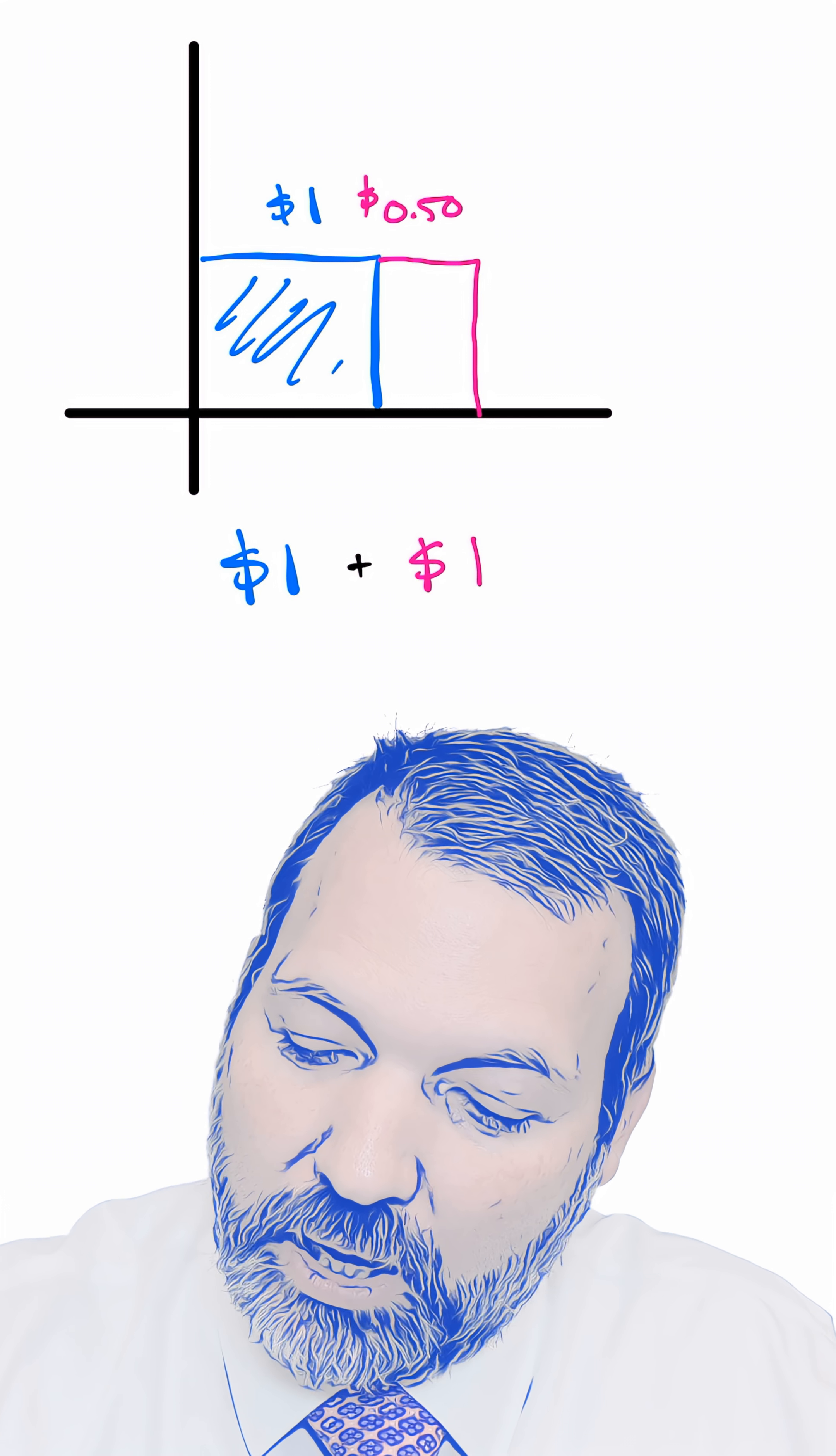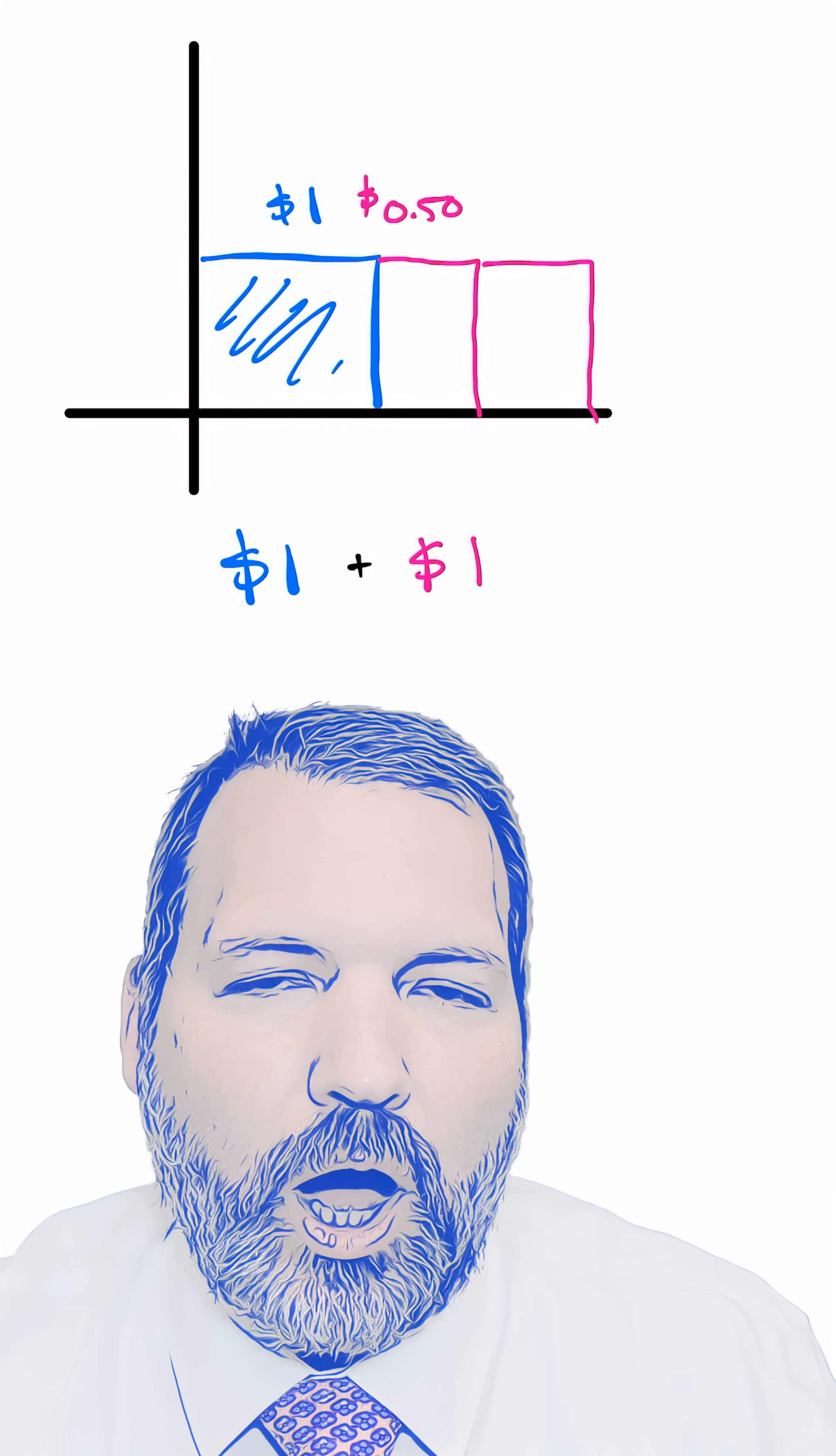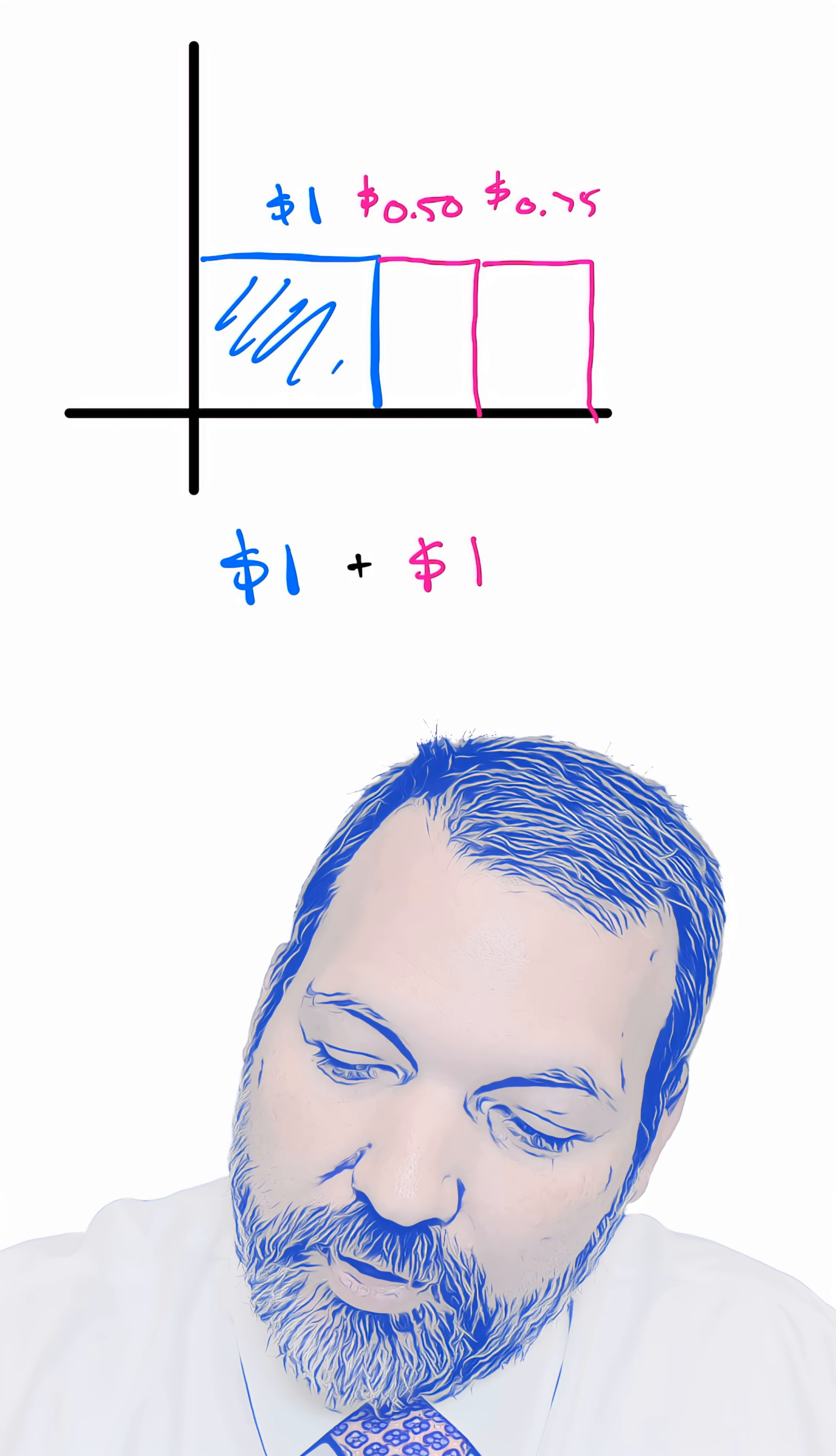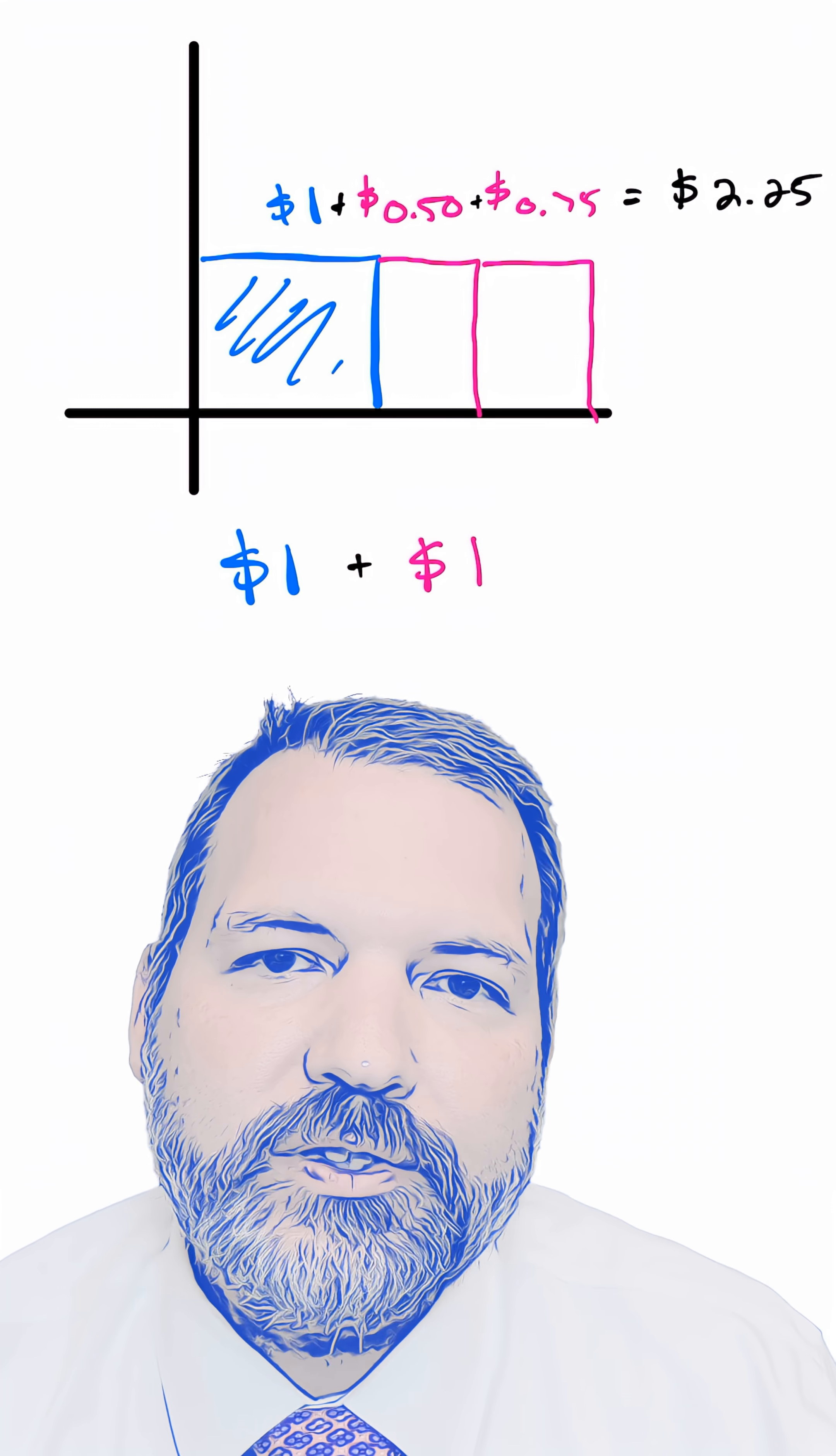But now, when we check in again six months from now, we've had a dollar 50 in the bank for half the year. Meaning the bank doesn't just owe us the other 50 cents, they owe us half of that dollar 50, another 75 cents. And when you add all that together, you don't just get two dollars, you get two dollars and 25 cents.